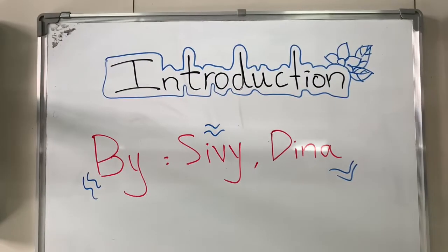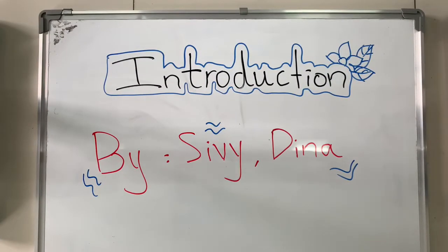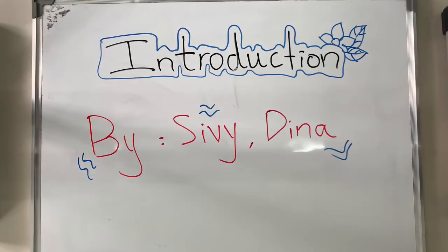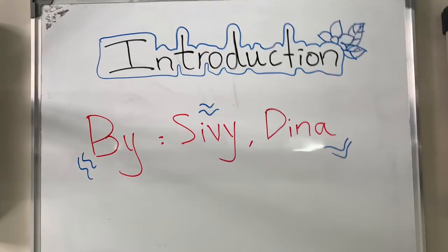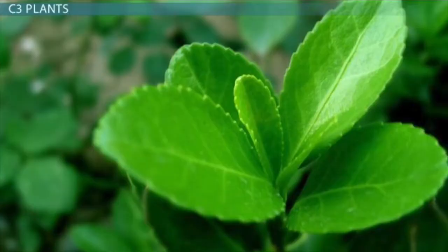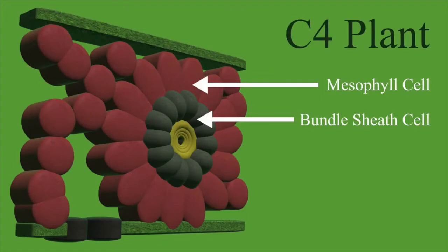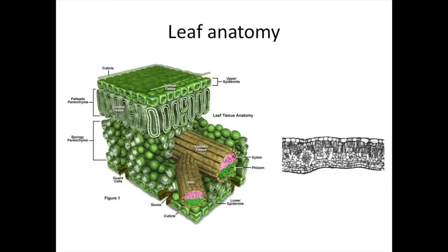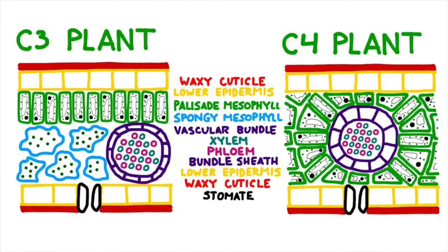Hi, my name is Dina and your co-host CV. For this video, we'll be talking about the structure and how photosynthesis occurs in C4 plants. First of all, let's have an overview of the video. In the beginning, we'll briefly go over the structure of C3 leaves, then we'll move over to C4 plants, and lastly, we will discuss the differences between C3 and C4 plants.